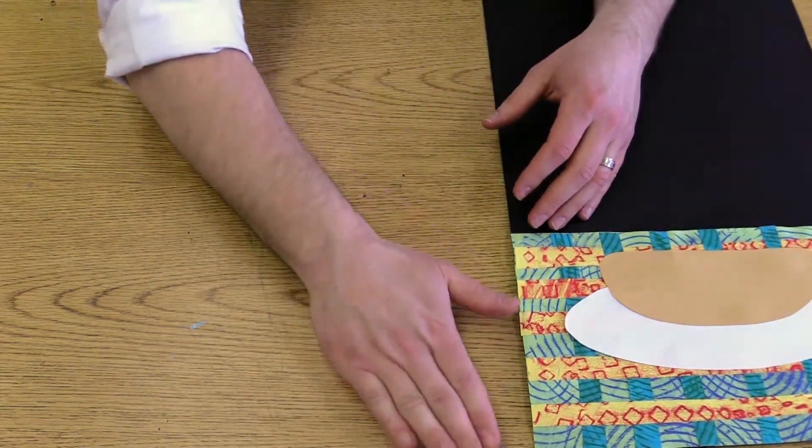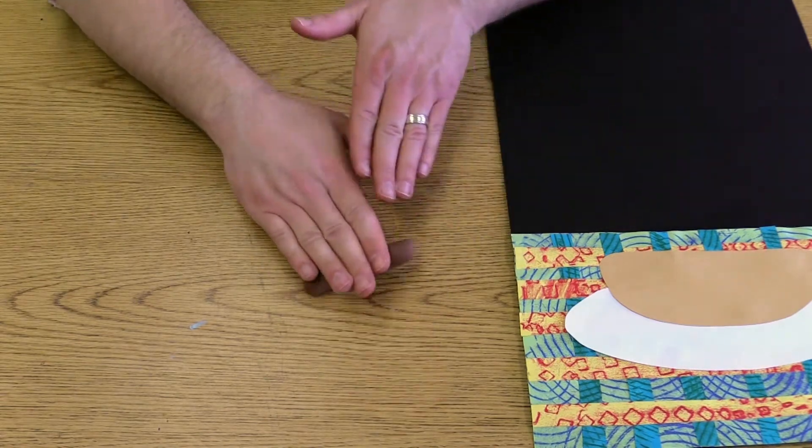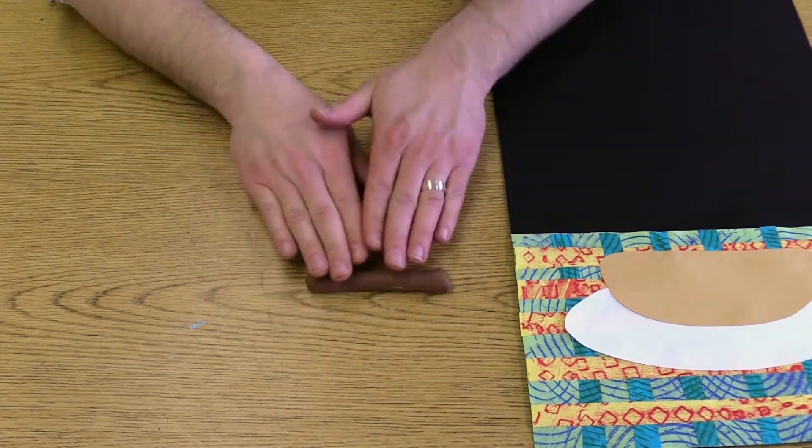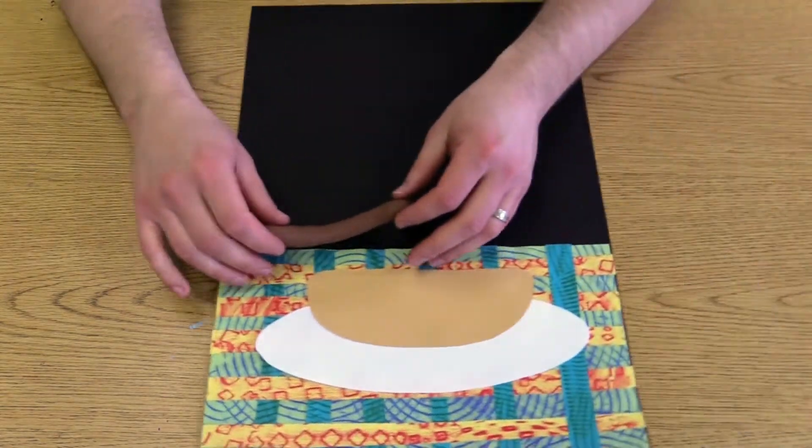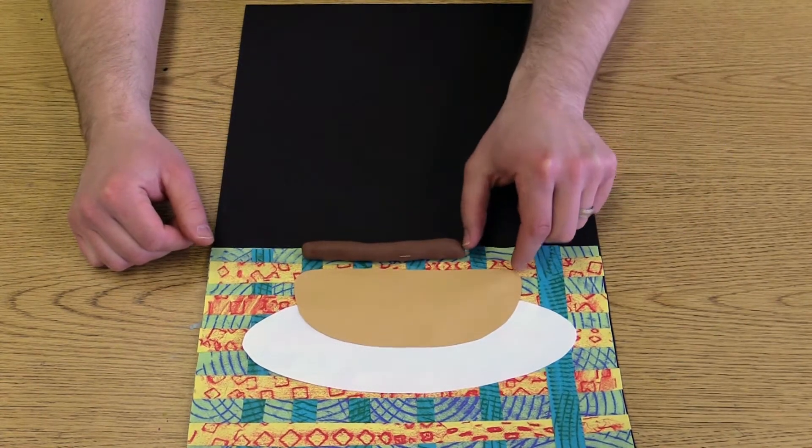Then take it on the table and roll it out with your hand. You want it to be about the same length as the bun. Is this the same length? No, it's a little short.